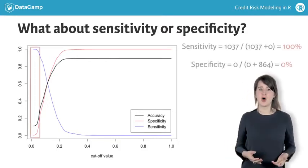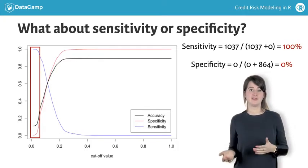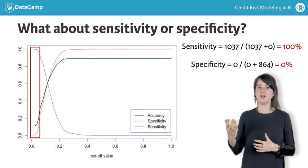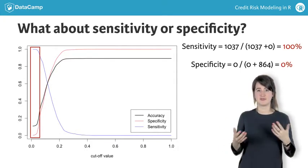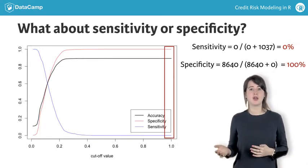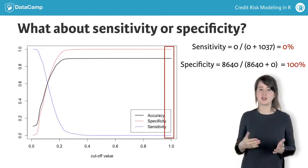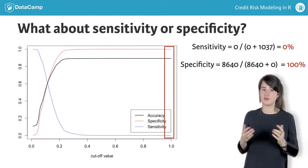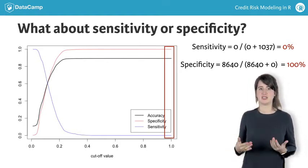Taking a cutoff of 0, all cases will be classified as defaults, leading to a sensitivity of 100% but a specificity of 0. At the other extreme, taking a cutoff of 1, all cases will be classified as non-defaults, leading to a specificity of 100% but a sensitivity of 0.